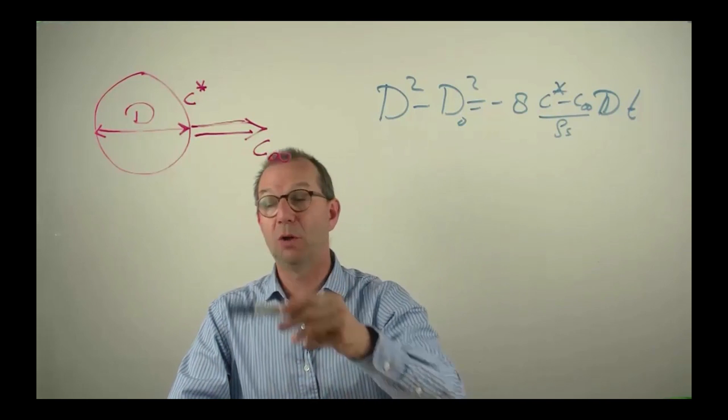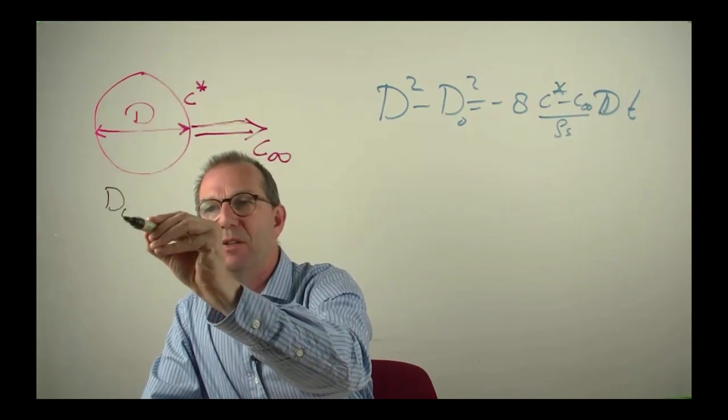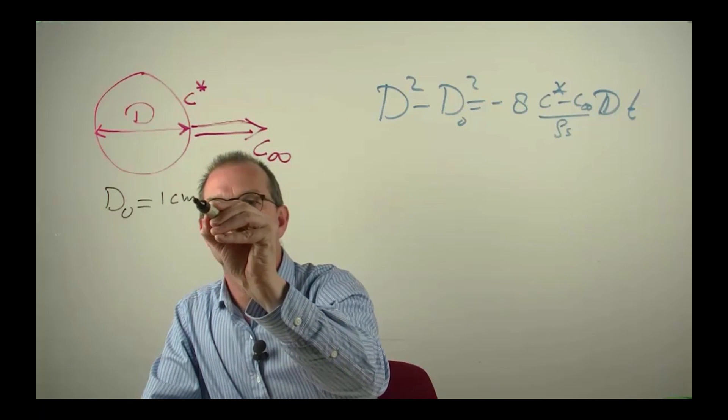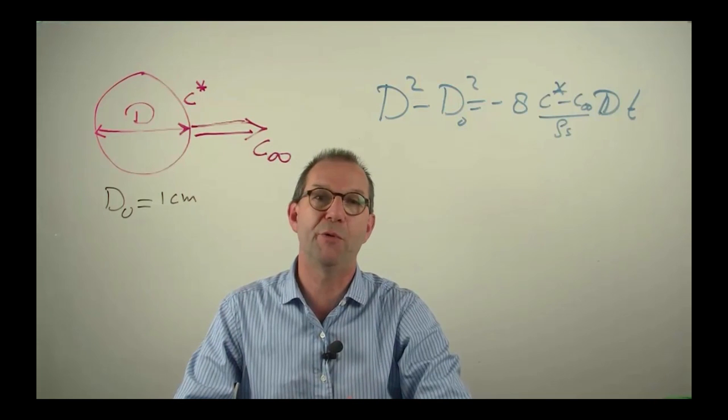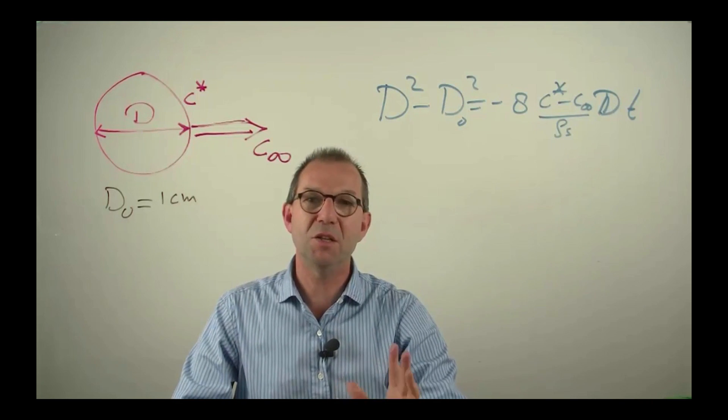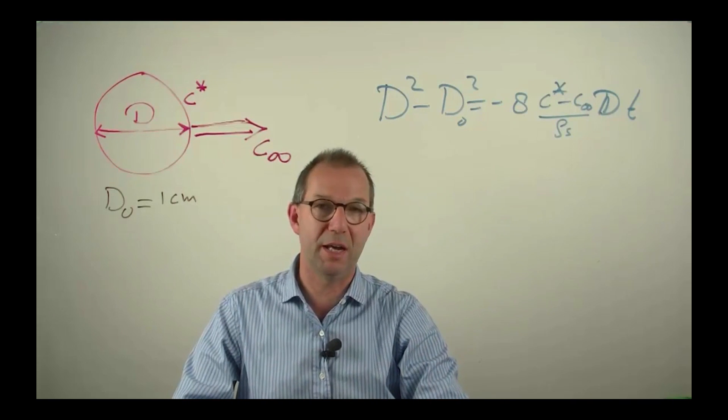How long does it take if this is initially a centimeter, before it's halved and only 5 mm is left? That is not so difficult to roughly, really coarsely estimate.